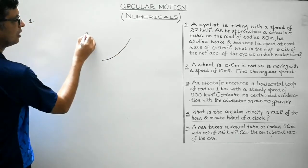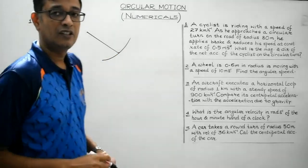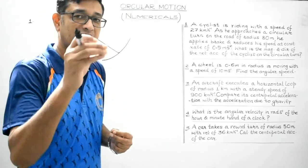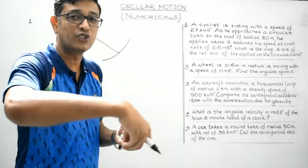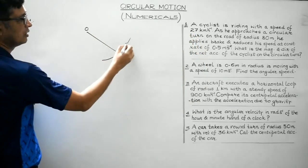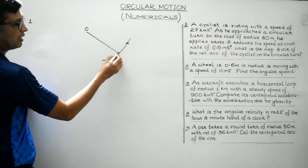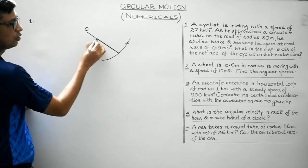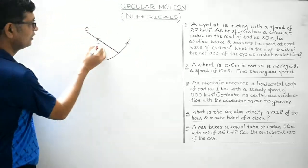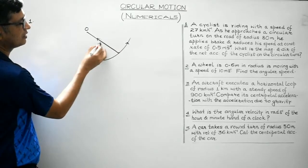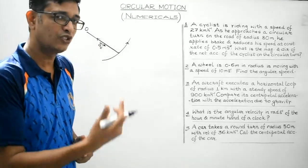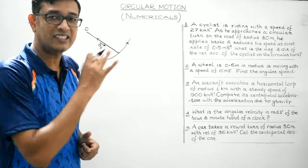Since it's the case of a circular turn, the body must be having centripetal acceleration. It is only due to the centripetal acceleration that the body is able to execute the circular turn. If O is the centre of the circular turn and the body is moving along this direction, then the centripetal acceleration — also known as radial acceleration — must always act along the radius towards the centre.